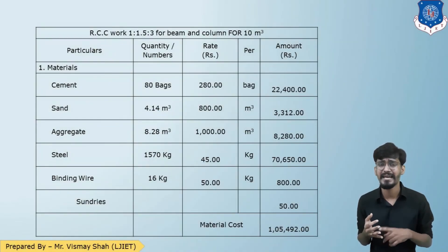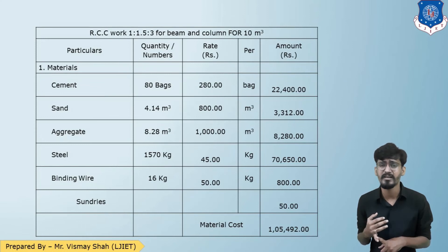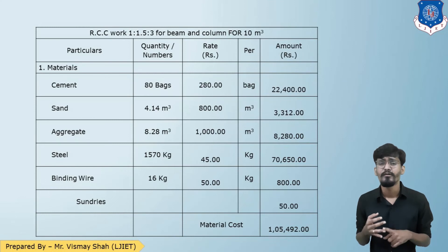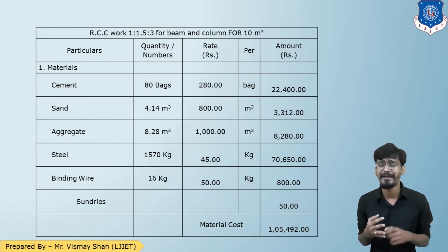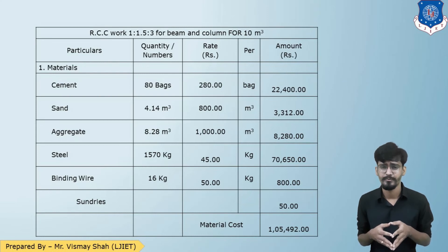In the material cost table: cement at Rs. 280 per bag, sand at Rs. 800 per cubic meter, aggregate at Rs. 1,000 per cubic meter, steel at Rs. 45 per kilogram, and binding wire at Rs. 50 per kilogram. Sundries of Rs. 50 are also added. The total material cost is Rs. 1,05,492.